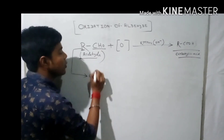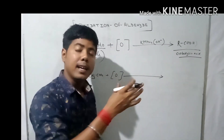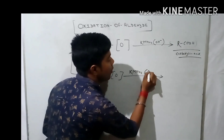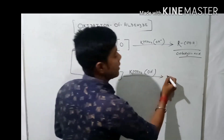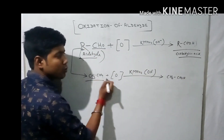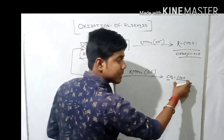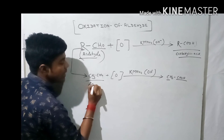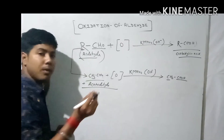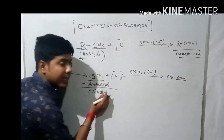Now for another example: put the value of R as CH3. So CH3CHO oxidized — that means oxygen is added — in the presence of KMnO4 with OH⁻ medium, to form acetic acid: CH3COOH. So acetaldehyde is oxidized to acetic acid. The common name of CH3CHO is acetaldehyde — A-C-E-T-A-L-D-E-H-Y-D-E — and the IUPAC name of this compound is ethanal, where -al is the suffix for aldehyde.